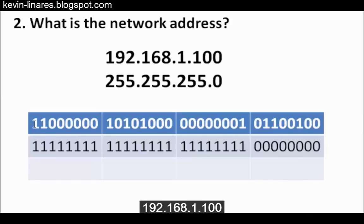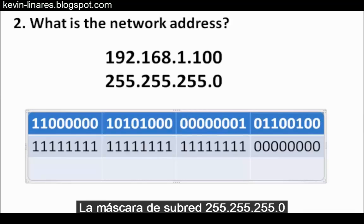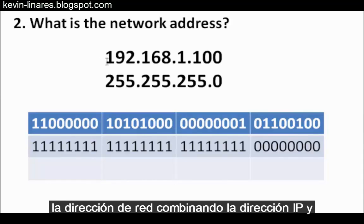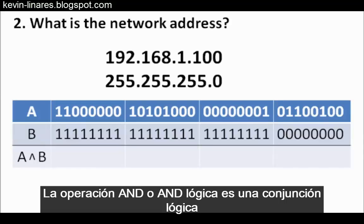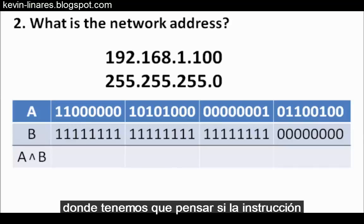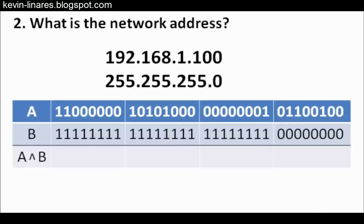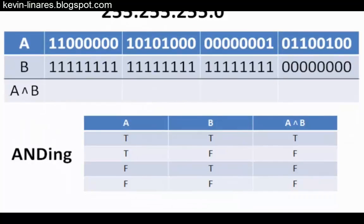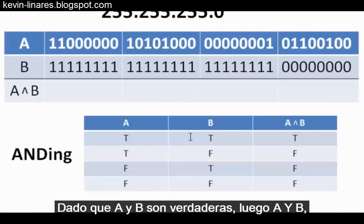In this table, the IP address 192.168.1.100 is shown on the upper row converted to binary, and the subnet mask 255.255.255.0 is on the lower row converted to binary. The router and computer calculate the network address by combining the IP address and subnet mask — a process called ANDing. Logical ANDing is a logical conjunction where we determine whether the statement A AND B is true or false. If A is true and B is true, then A AND B is also true.